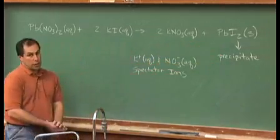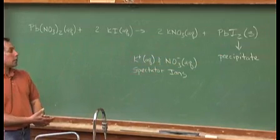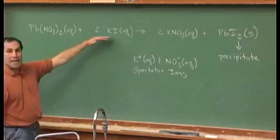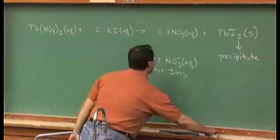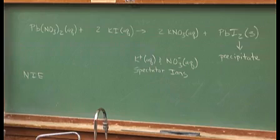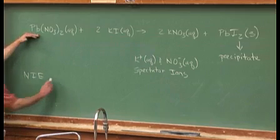Our net ionic equation, meaning do not include the spectator ions, does not involve nitrate or potassium plus. So the net ionic equation, or NIE, contains lead two plus.